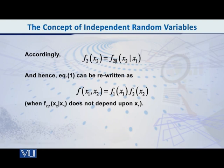Now, if it is this, then the equation that was our first equation, how can we rewrite it? What was our first equation? That f(x1, x2), the joint PDF, is equal to f1(x1) into f(x2 given x1). Now, f(x2 given x1) is equal to f(x2).